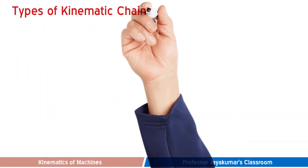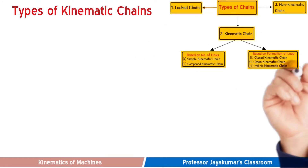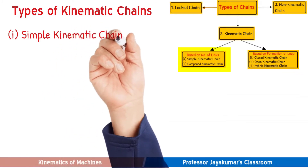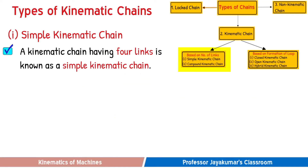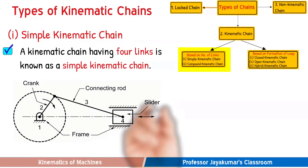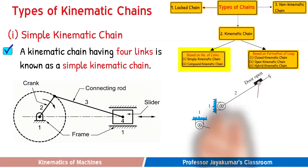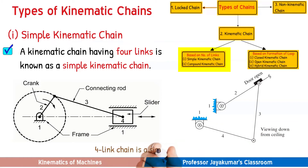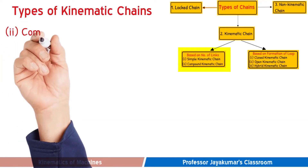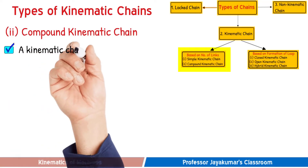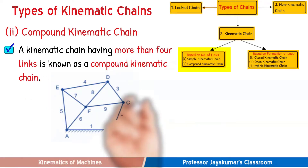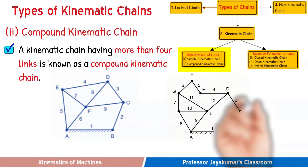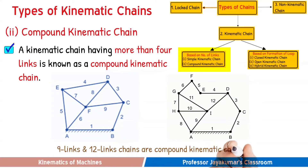Having understood the meaning of kinematic chains, they can be classified based on the number of links as simple and compound kinematic chains. If a kinematic chain has four links, then it is known as a simple kinematic chain. The slider crank mechanism and automatic door closure mechanism all have four links and hence are examples of simple kinematic chains. If a kinematic chain has more than four links, it can be called a compound kinematic chain. The 9-link and 12-link chains shown are typical compound kinematic chains.